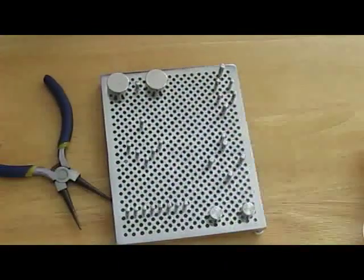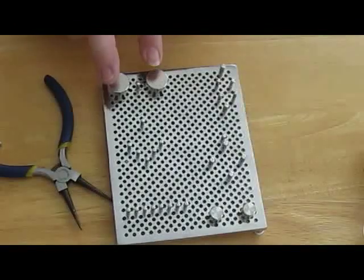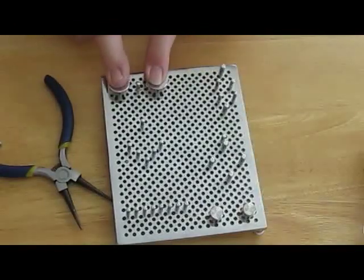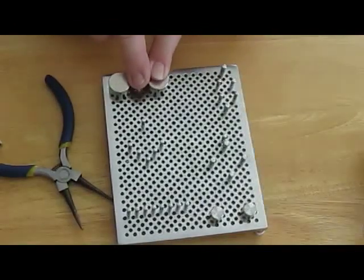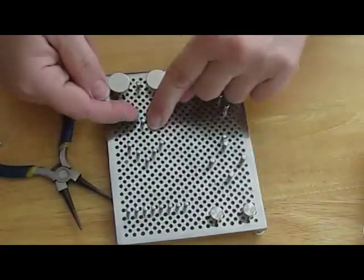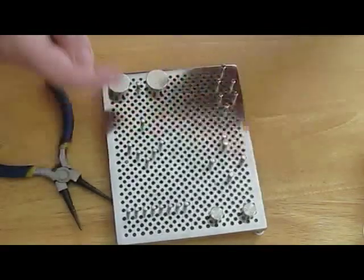Another thing you could make is a heart. You would use the two large pegs here, the smaller peg in between them, and then a single peg at the bottom, which forms the bottom of the heart.